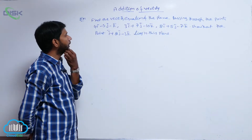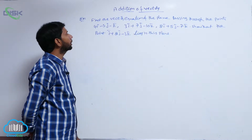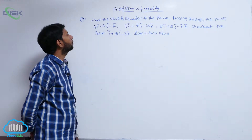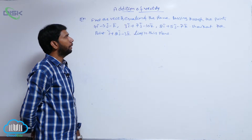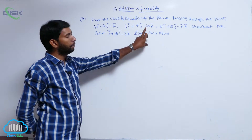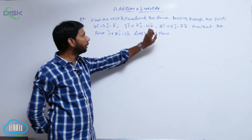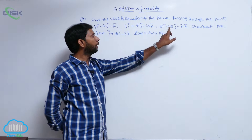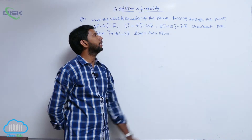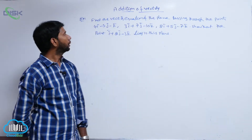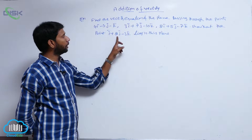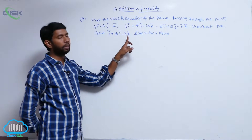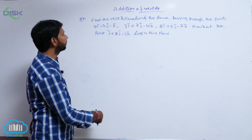Find the vector equation of a plane passing through the points 4î - 3ĵ - k̂, 3î + 7ĵ - 10k̂, and 2î + 5ĵ - 7k̂. Show that the point î + 2ĵ - 3k̂ lies in the plane.